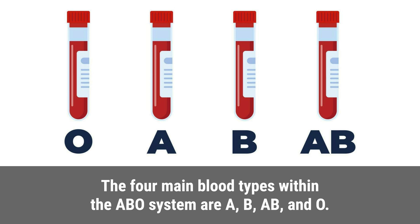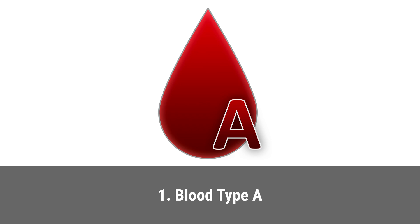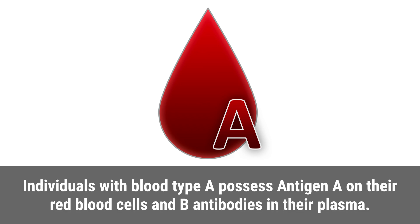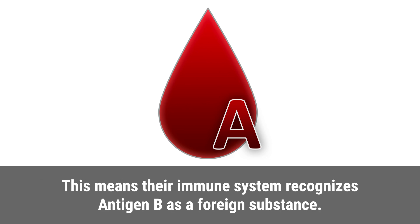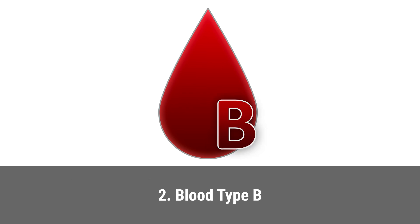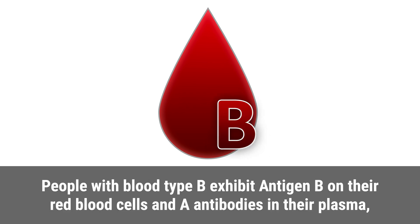Individuals with blood type A possess antigen A on their red blood cells and B antibodies in their plasma. This means their immune system recognizes antigen B as a foreign substance. People with blood type B exhibit antigen B on their red blood cells and A antibodies in their plasma.